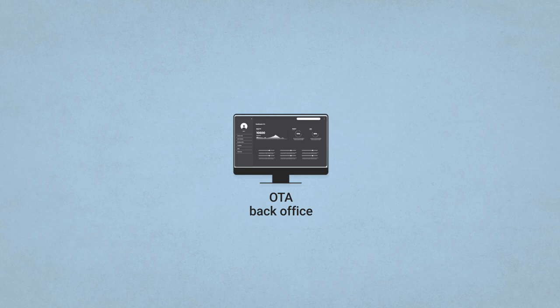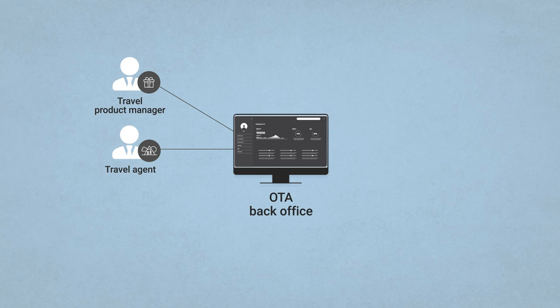First, there are managers responsible for travel products and suppliers. Suppliers provide OTA with flights, hotels, packages, stores, while product managers make sure that these products are sold successfully. The managers define commissions, sales strategy, customer acquisition approaches. They also go directly to suppliers to negotiate deals.